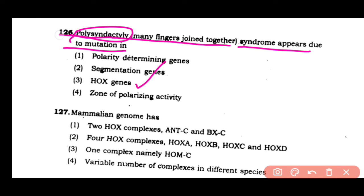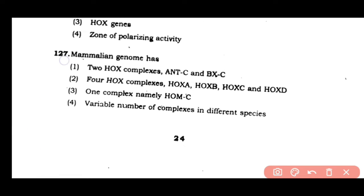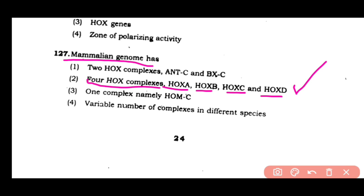Question number 127 covers Hox gene clusters A, B, C, and D.